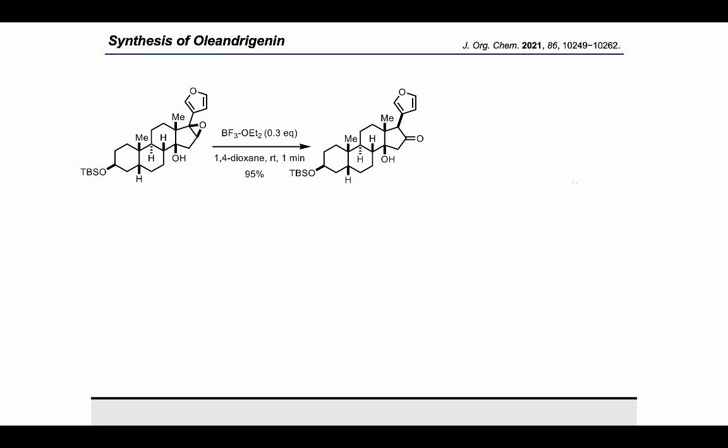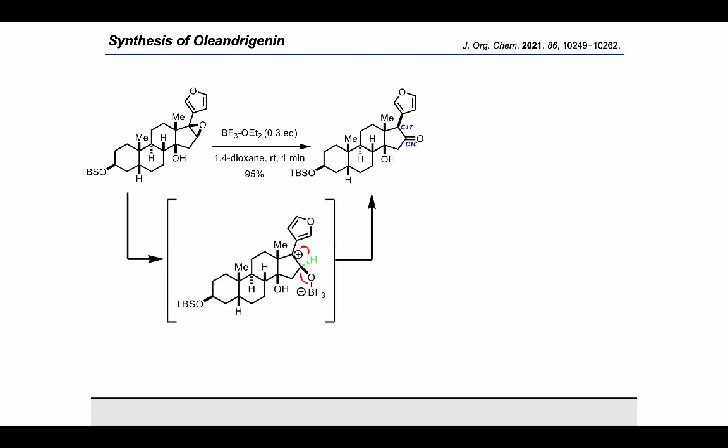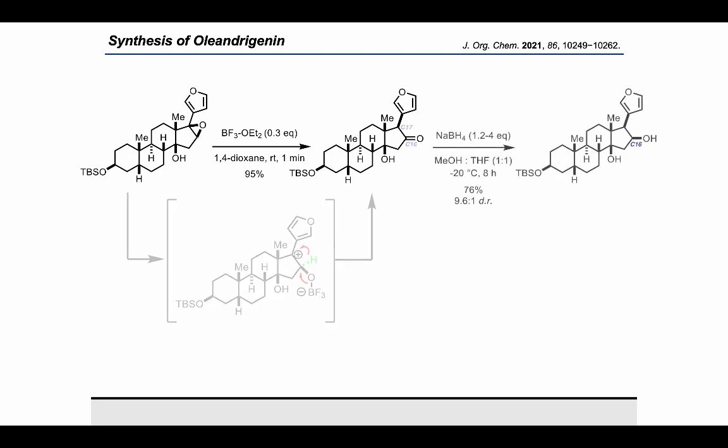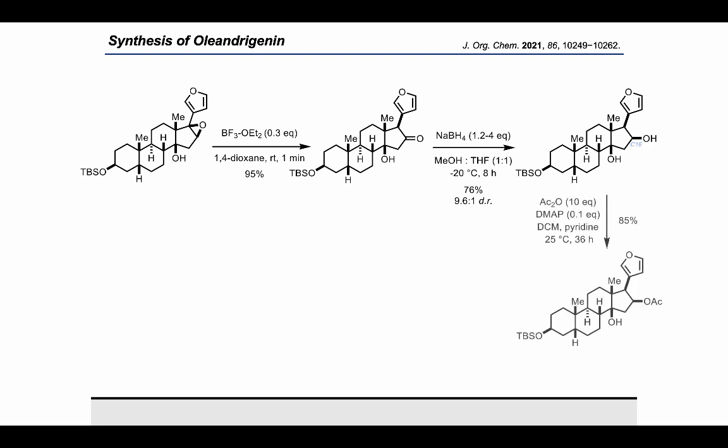Most importantly, the analysis of this compound and subsequent intermediates were consistent with the stereoselective hydrogen migration shown in the mechanism to establish the desired beta-C17 stereocenter, as well as installing the C16 ketone. The ketone product was then subjected to reduction with sodium borohydride to provide the desired beta-C16 product in 76% yield and 9.6 to 1 DR. The diastereomeric mixture was separated by normal phase column chromatography and the desired diastereomer was acetylated with acetic anhydride, DMAP, and pyridine to provide the known intermediate as a single diastereomer after purification.